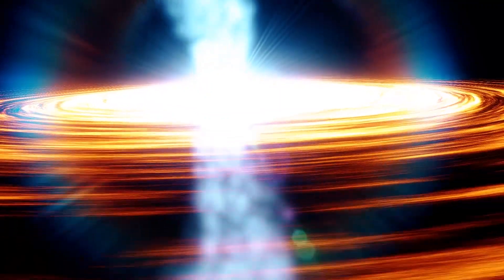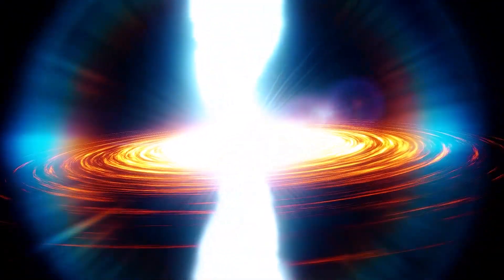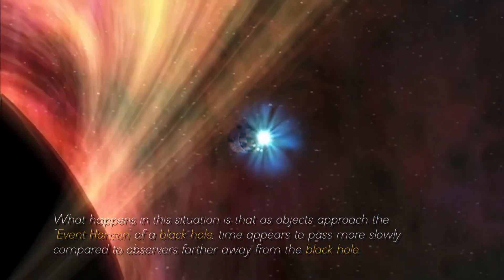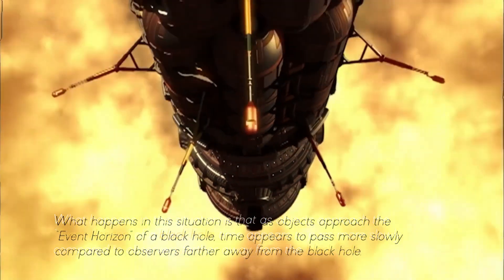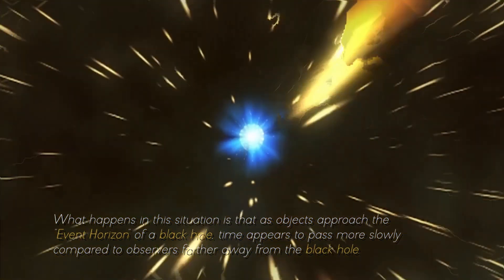But most surprising of all, the extreme gravitational attraction near a black hole gives rise to a phenomenon known as time dilation. What happens in this situation is that, as objects approach the event horizon of a black hole, time appears to pass more slowly compared to observers farther away from the black hole.